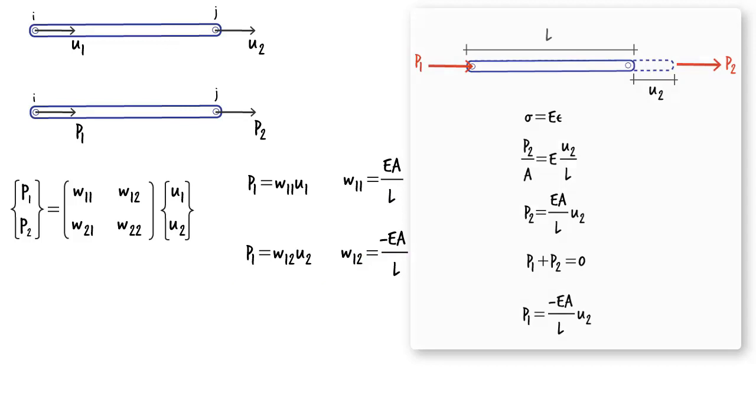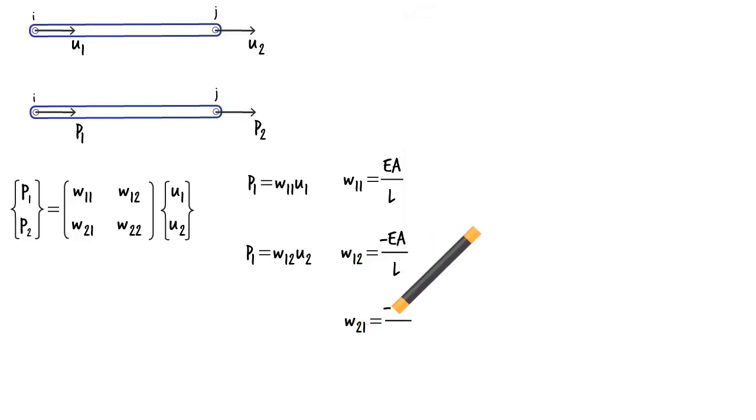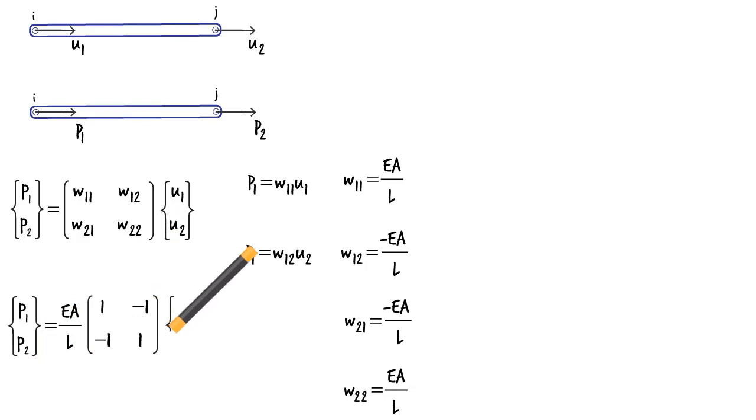We can determine W21 and W22 in the same manner. Thus, the member stiffness matrix in the local coordinate system can be written as. Before we can use these equations to model an entire truss, we need to transform the coordinate system from the local to the global system.